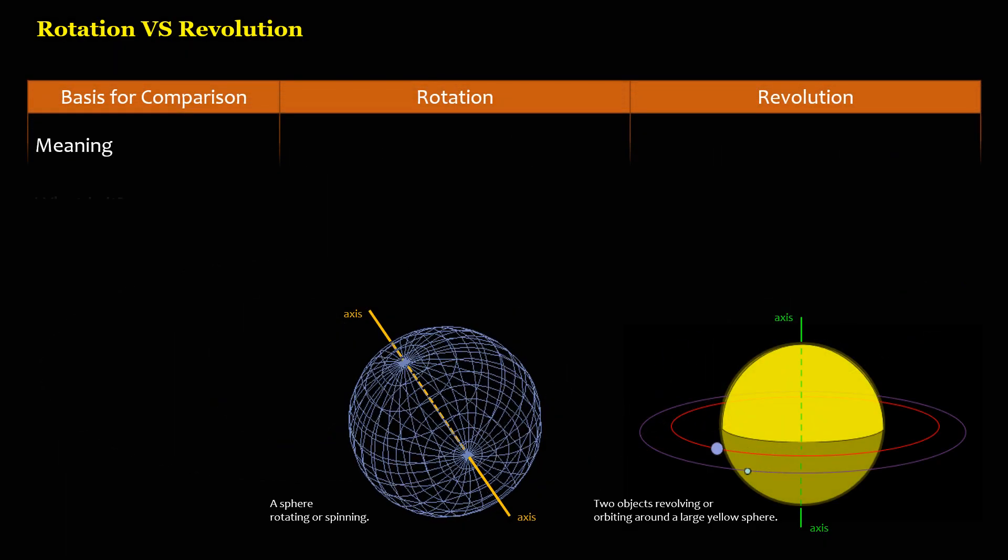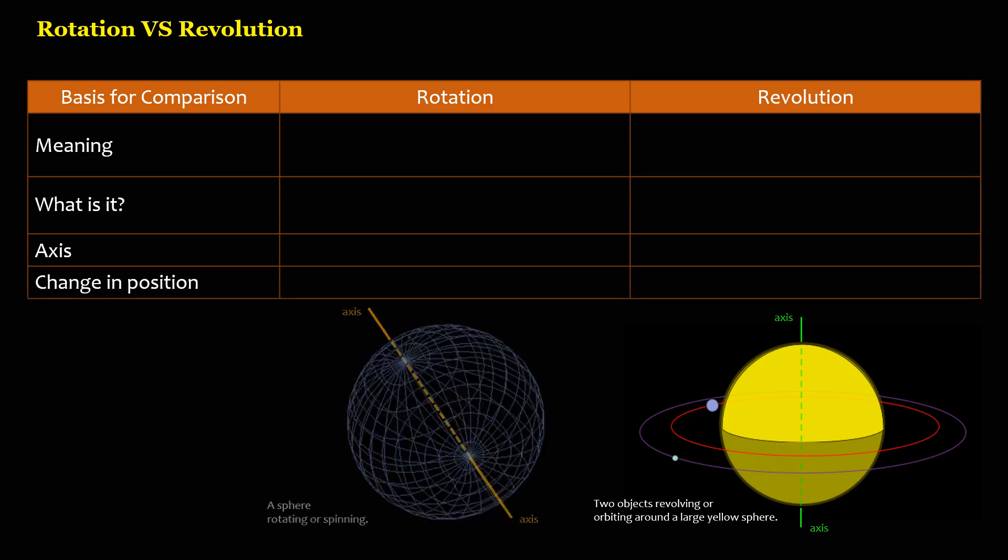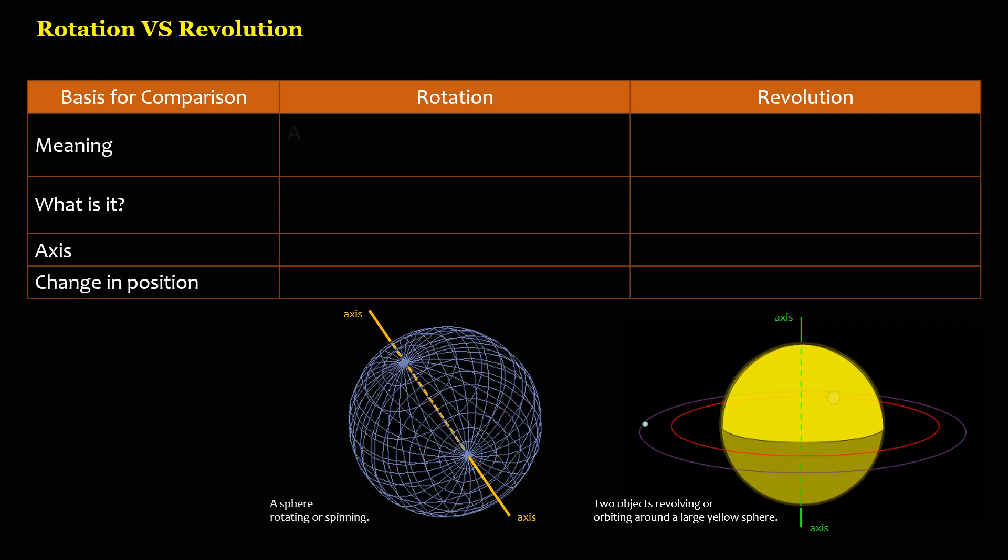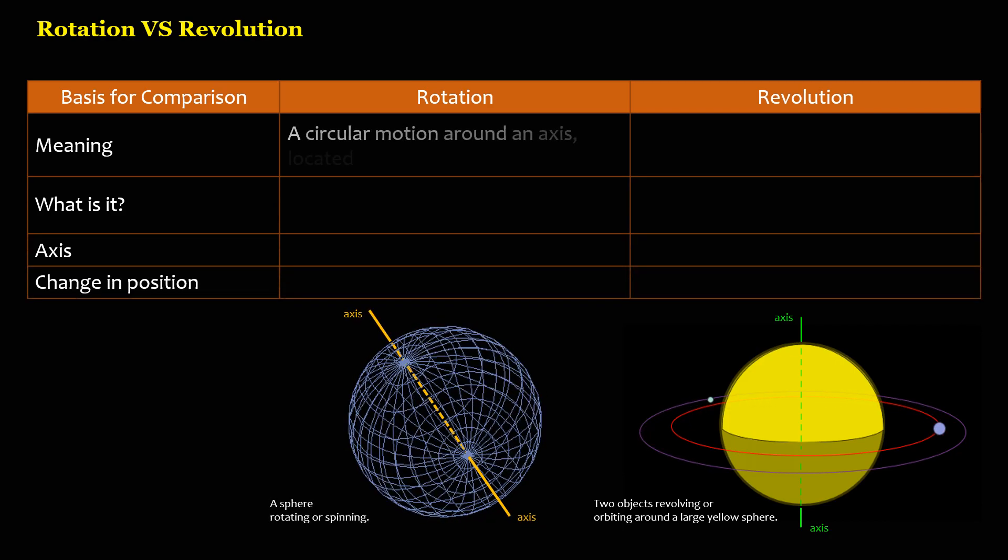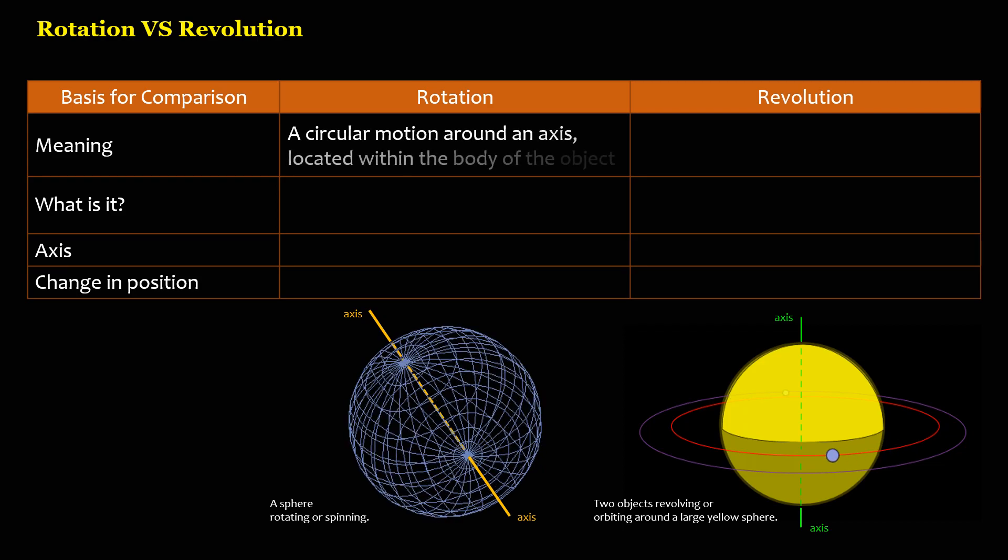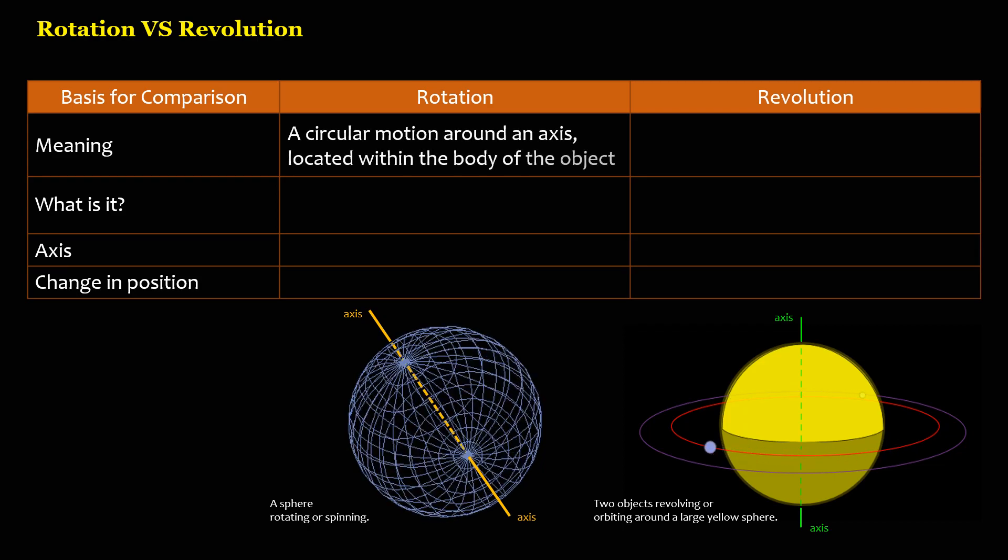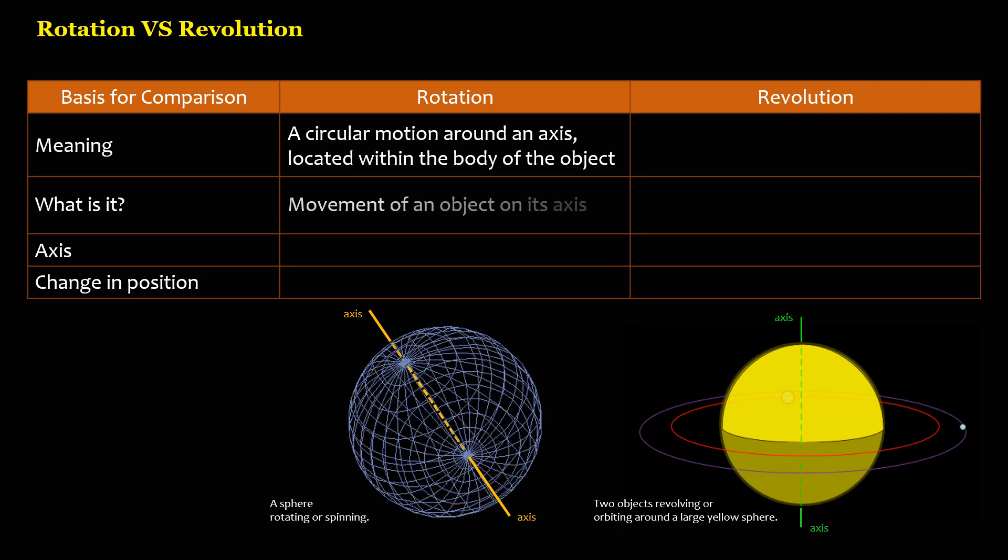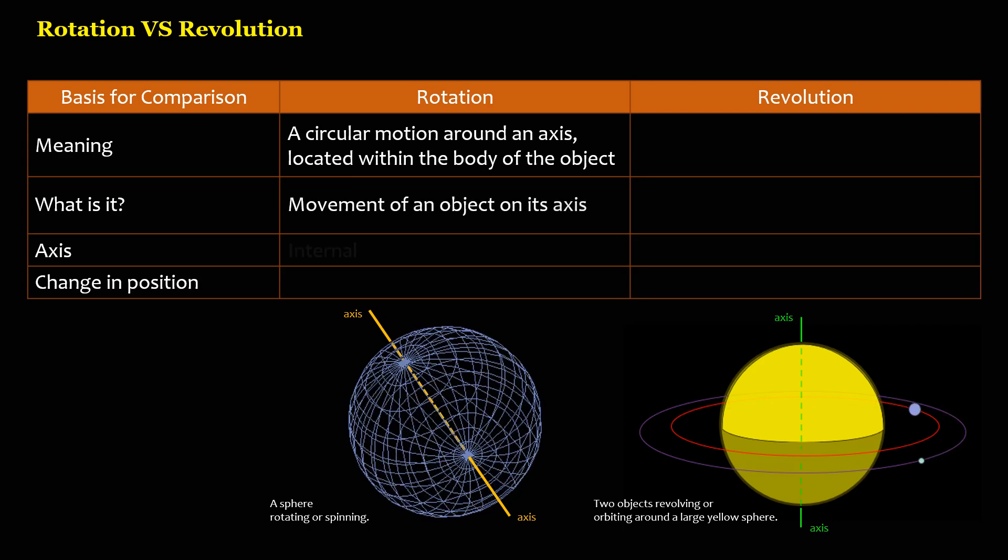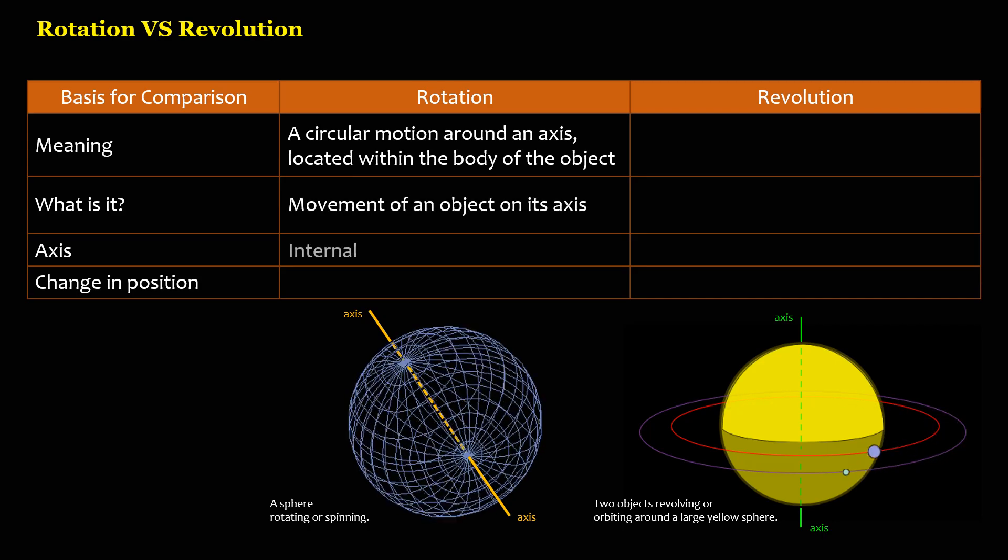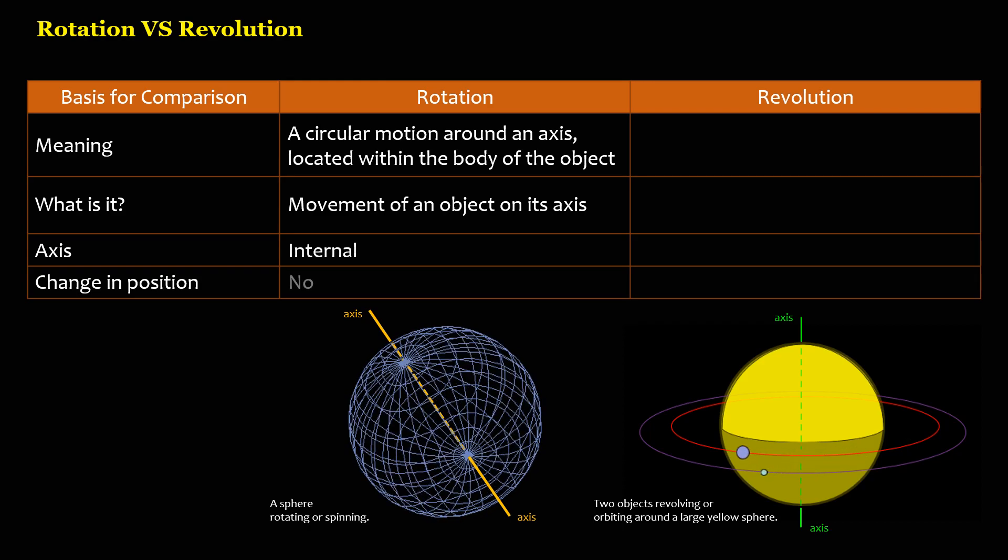Rotation vs Revolution. Rotation is a circular motion around an axis, located within the body of the object. It is a movement of an object on its axis. The axis is internal. No change in position.